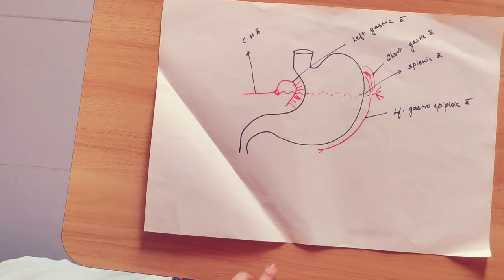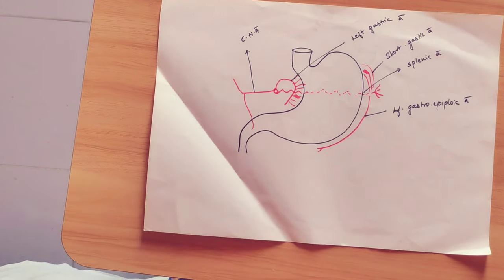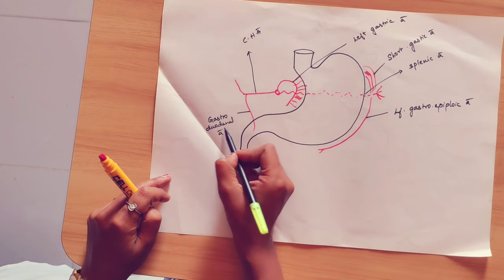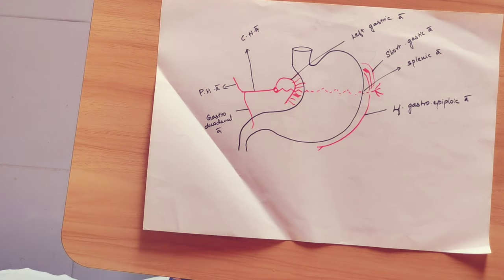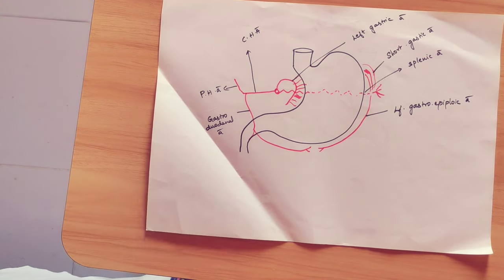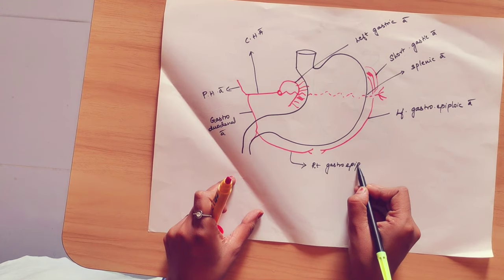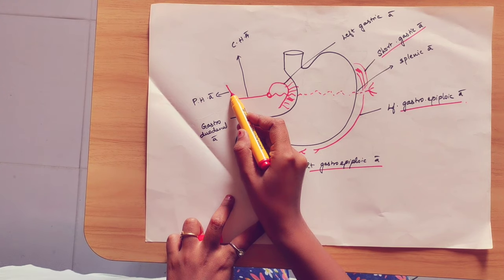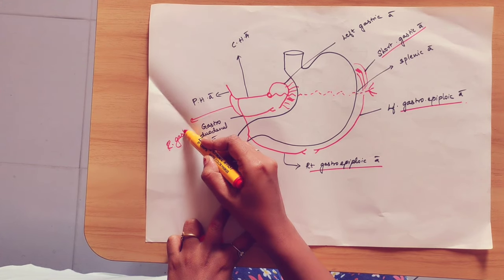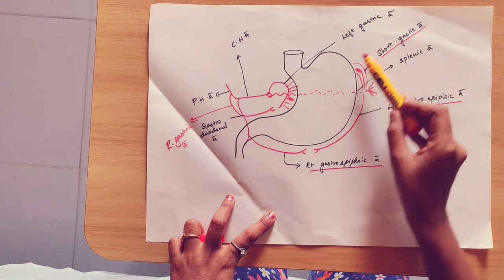The common hepatic artery divides into two parts: one is the proper hepatic artery and second is the gastro-duodenal artery. From the gastro-duodenal artery arises the right gastroepiploic artery. From the proper hepatic artery arises the right gastric artery. The right gastric artery and left gastric artery supply the lesser curvature.